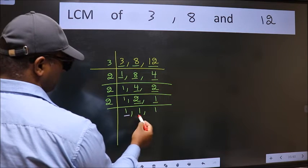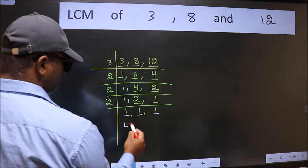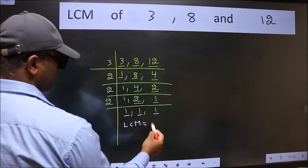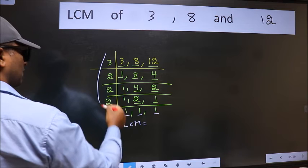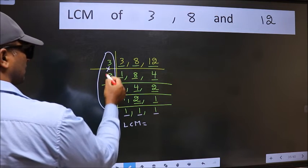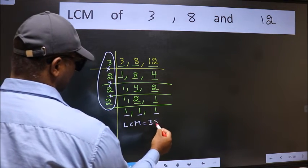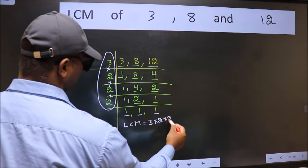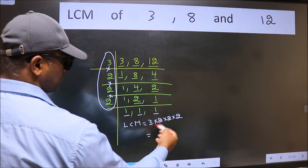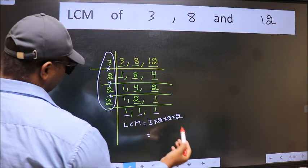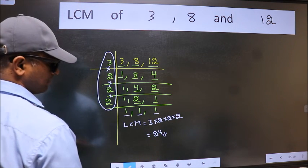Now we got 1 in all the 3 places. So our LCM is the product of these numbers. That is 3 into 2 into 2 into 2 into 2. When we multiply these numbers, we get 24. 24 is our LCM.